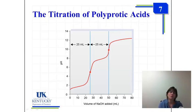What we want to be able to do is recognize what species would be present at every point along the titration curve. We'll consider the pHs at those equivalence points, but we will not actually calculate pHs during a polyprotic acid titration.